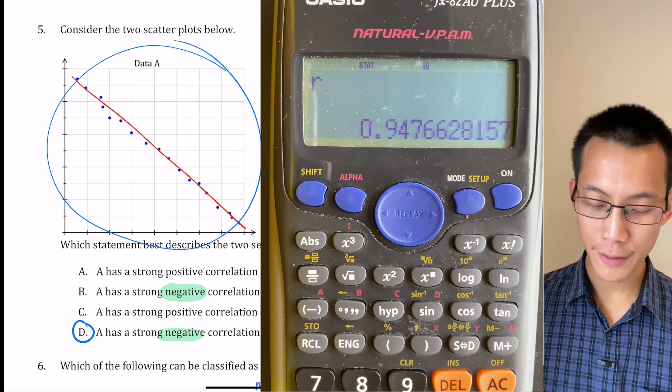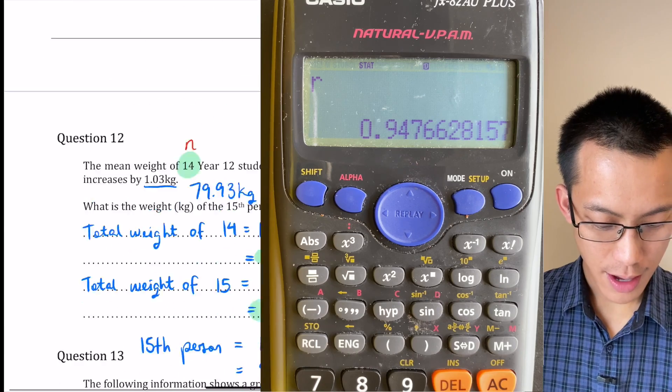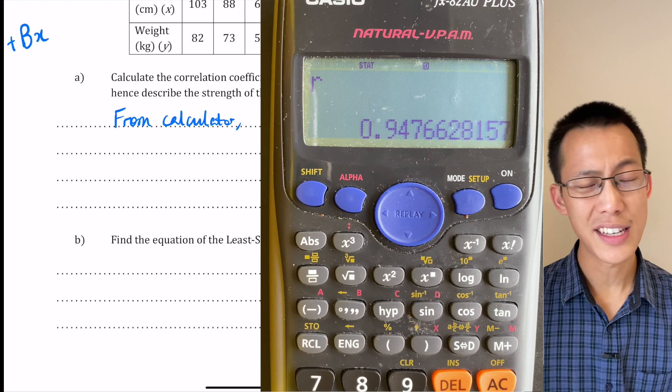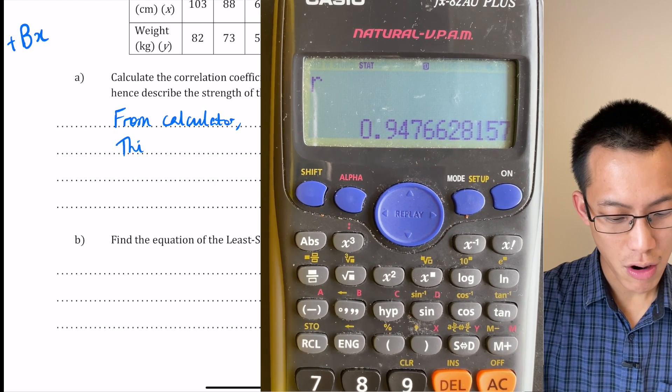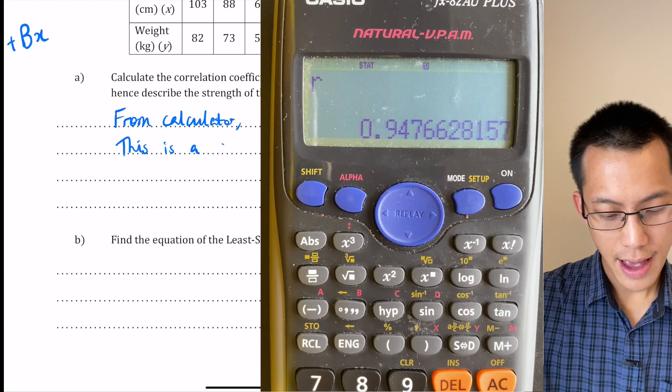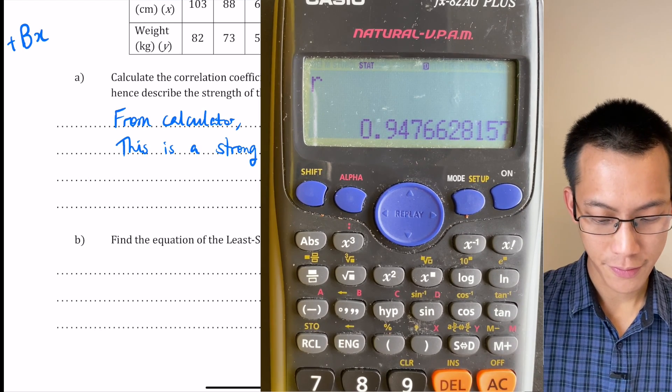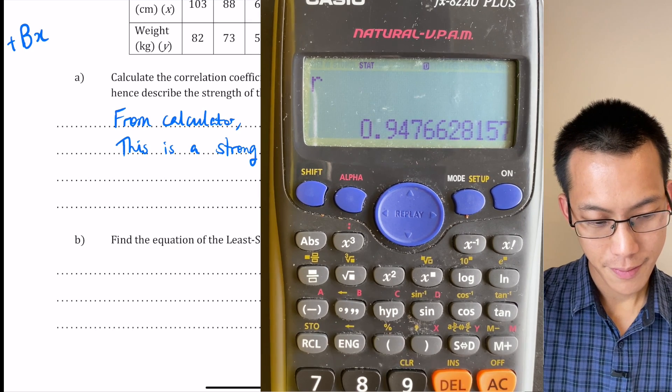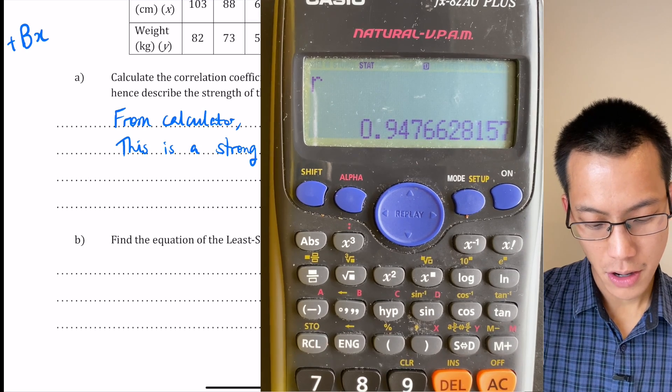So I'm looking for values like that. Now if you have a look down to this question now we can interpret this 0.94. Is that high or is it low? And the answer is it's very very close to 1. So what I would say is this is a strong and it's positive because it's not negative 0.947. It's a strong positive correlation. So that's all we needed to comment on that.